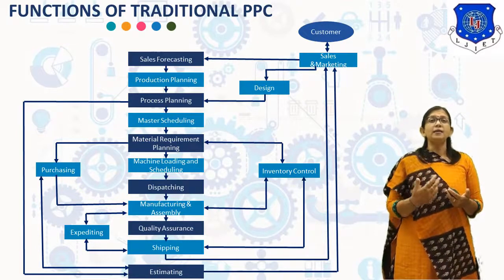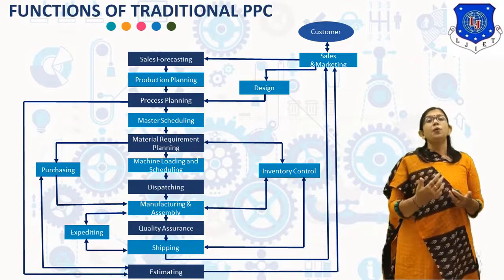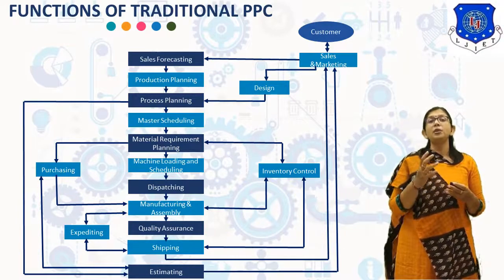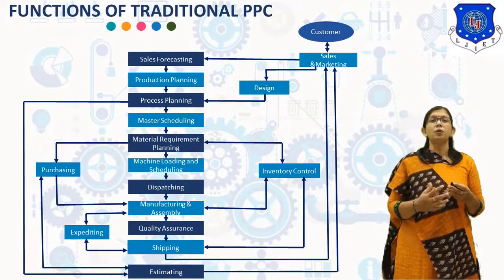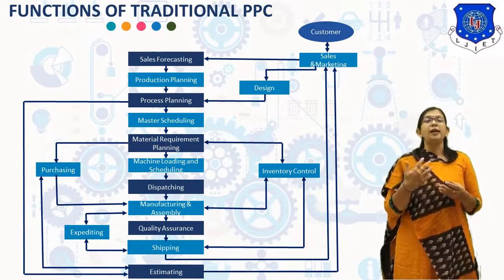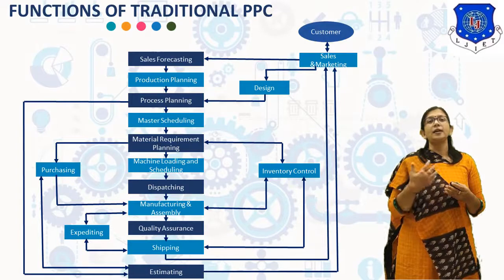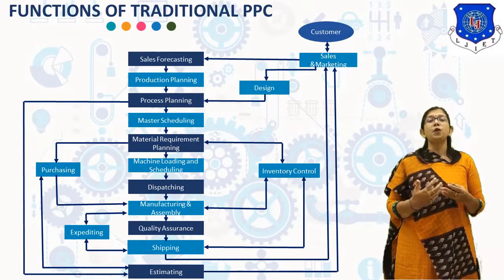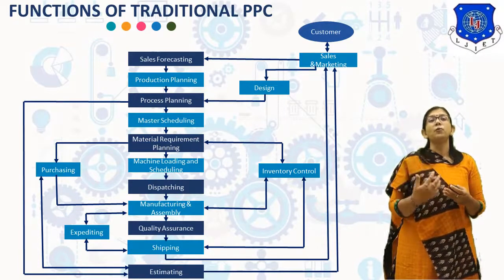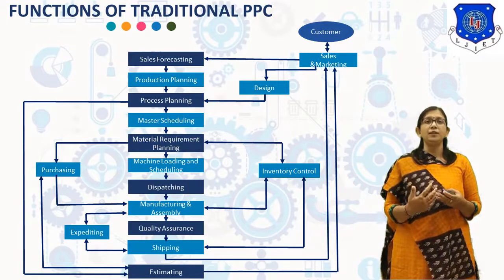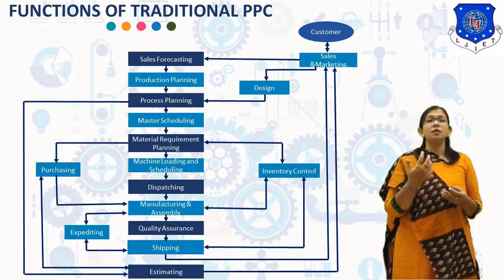The second function is Production Planning, which is a macro-level planning. The objective is to decide the production level for different products for a period of 6 months to 1 year. It is based on the sales forecast and the capacity of the factory. It is used to increase, decrease, or maintain the production level of a particular product based on the sales forecast.